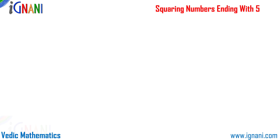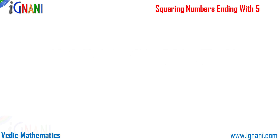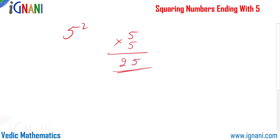The technique we will discuss is how to instantly square numbers whose last digit is 5. We can square all numbers which end with 5 — something like 5, 25, 35, 65, 125, 1000125, or any number as long as the last digit is 5. Remember, squaring means multiplying the number by itself. This Vedic Mathematics trick is very simple and lets you calculate in your mind within a few seconds.